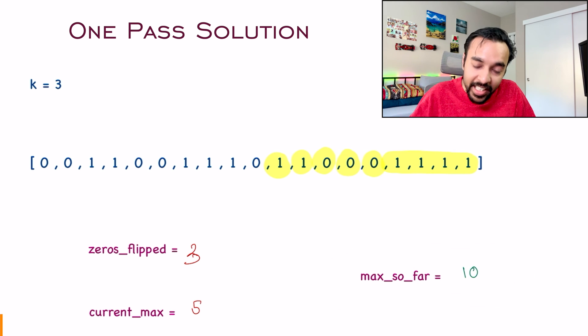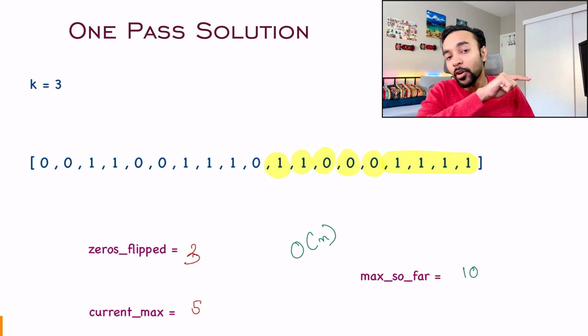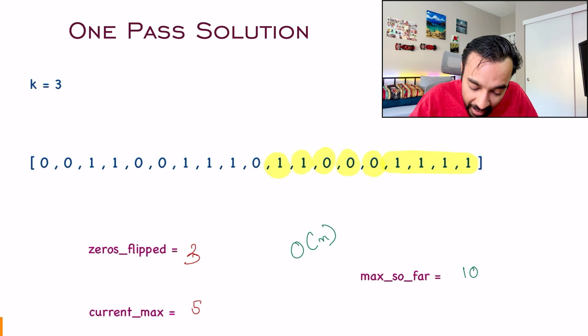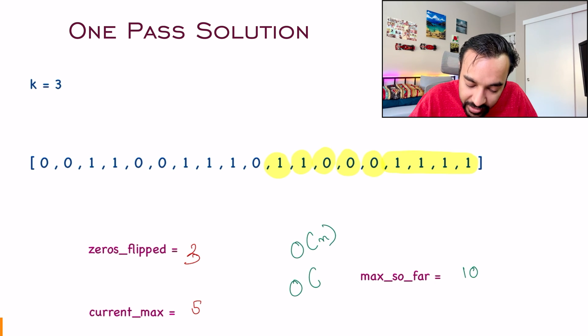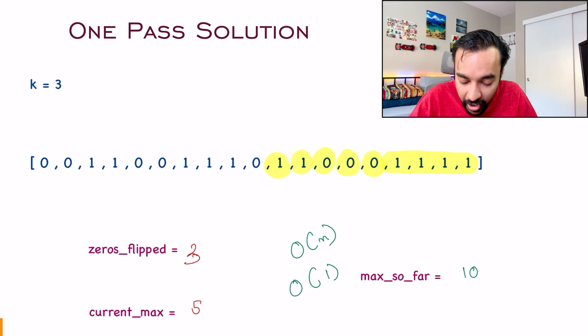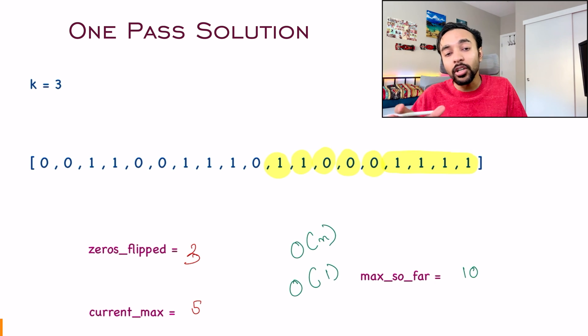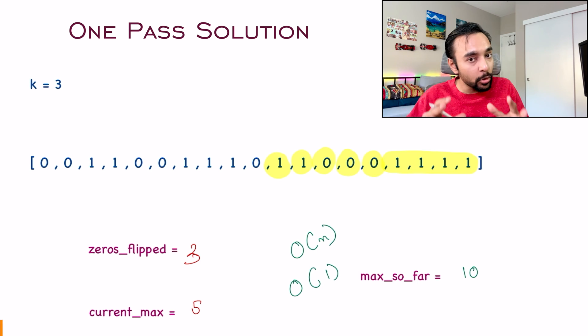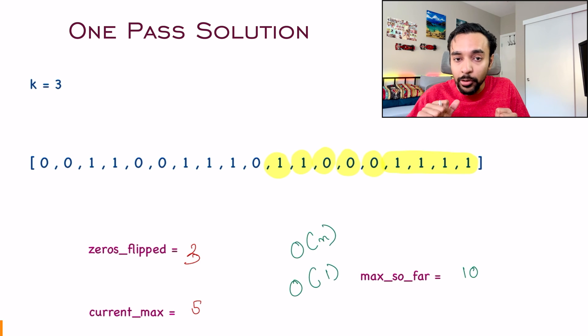This gives a time complexity of O(n) because we only do one iteration, and a space complexity of O(1) because we do not take any extra space to arrive at the solution.